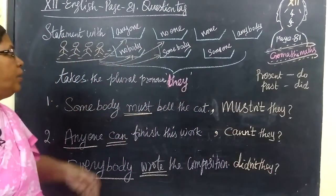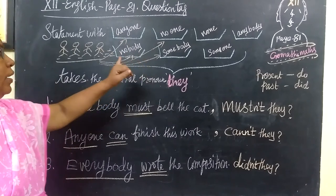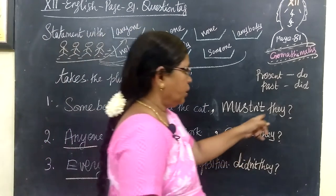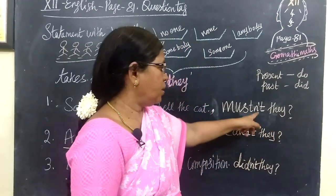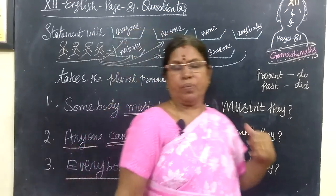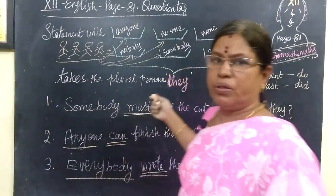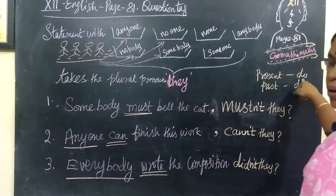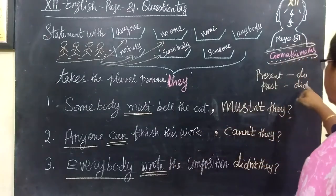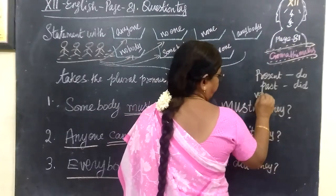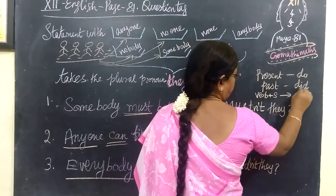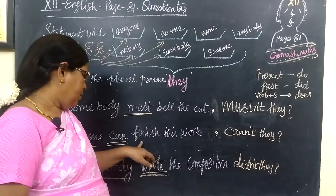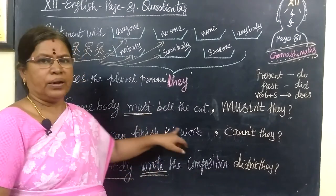So when you find this type of word — anyone, no one, none, anybody, nobody, somebody, someone — you have to use the plural pronoun 'they' at the end. If it is a positive statement, use a negative tag. Verb in present tense: use 'do.' Past tense: use 'did.' For modal verbs like 'can' or 'must,' you can use them directly.